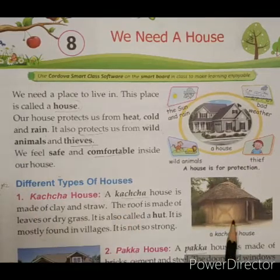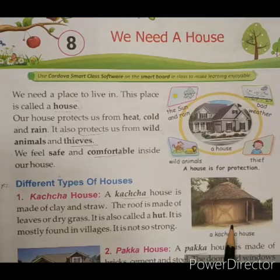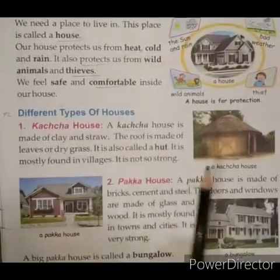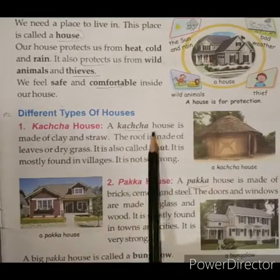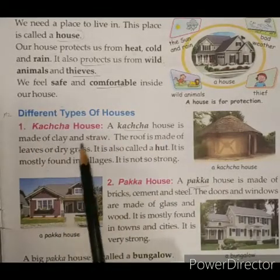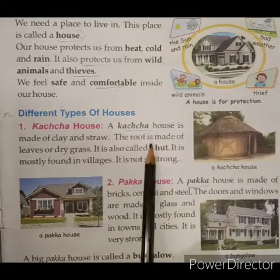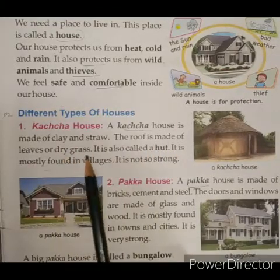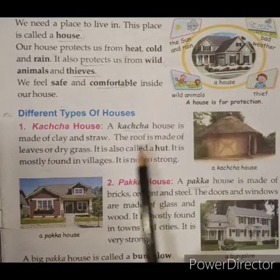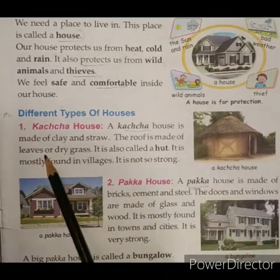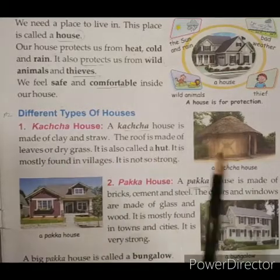In villages, the houses which we see are kaccha houses. As you can see in the diagram, this is a kaccha house. A kaccha house is made of clay and straw. The roof is made up of leaves and dry grass. This is also called a hut.